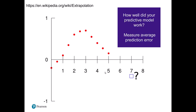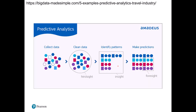Extrapolation means taking these values and plugging them into something — usually you want to do this graphically. You take your predictive model, plug it into historical data, and say: historically speaking, here's how my model would have performed. You also have to think about average prediction error — how far above or below the actual value is your prediction? That's asking how well your model is actually working. Visually, you collect your data, clean it up, identify patterns, and then make predictions and foresight. For instance, you might have an old store with a pattern of sales increases over time and use that to predict what new stores should expect.